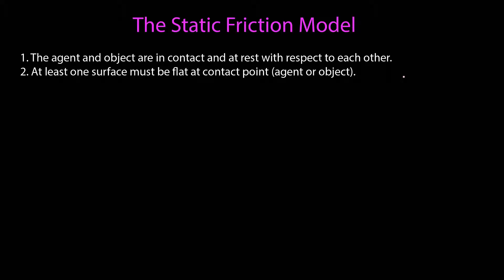In this video, we're going to develop a model for static friction. An agent and object are in contact with each other, but this time they're at rest — nothing is moving with respect to each other. We must require at least one surface to be flat so we can find surfaces that are parallel and perpendicular to that surface.